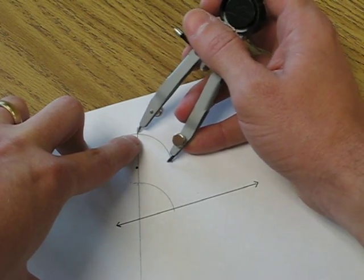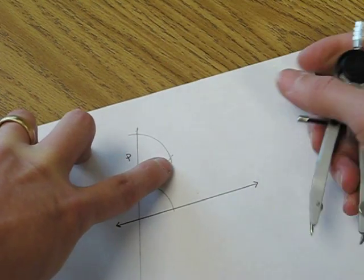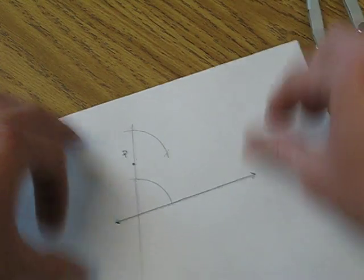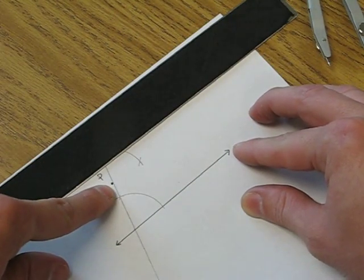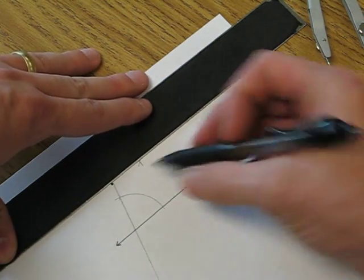Alright, and that will give us an X marks the spot, where we can now use our straight edge to connect point P, in this case, with our other side.